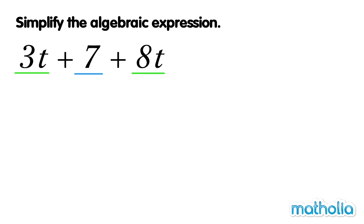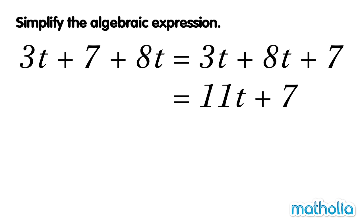Let's rewrite the expression so that the terms with t are together. 3t plus 8t equals 11t. So 3t plus 7 plus 8t equals 11t plus 7. We have simplified the expression.